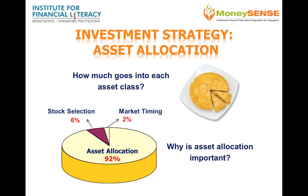In a landmark paper in 1986, Brinson and colleagues concluded that the portfolio's static target asset allocation explained most of the portfolio's total return and volatility over time. Active investment decisions such as security selection and market timing played minor roles. These findings were subsequently confirmed by other researchers. Unless there is a strong belief in the ability to select active managers who will deliver higher risk-adjusted net returns, the investor's focus should be on the asset allocation choice.